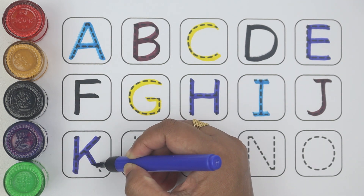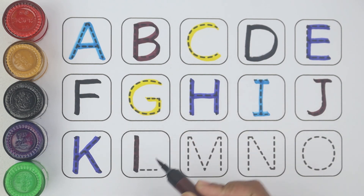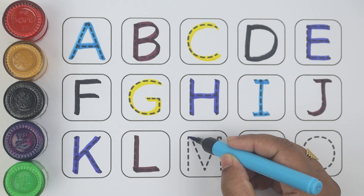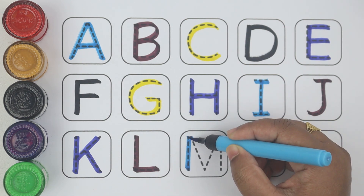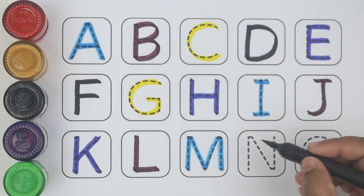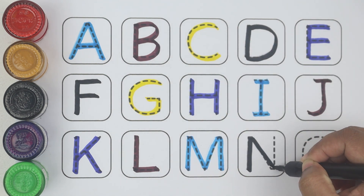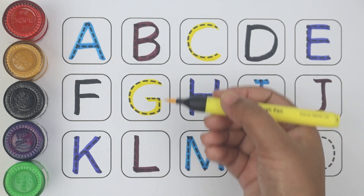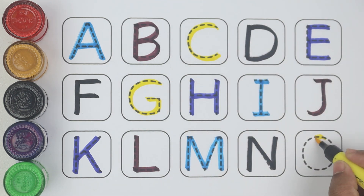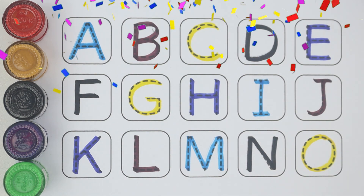K for kite, brown color. L, L for lion, sky blue color. M, M for moon, black color. N, N for nest, yellow color. O, O for orange. A, B, C, D, E, F, G, H, I, J, K, L, M.